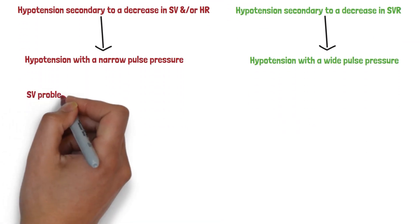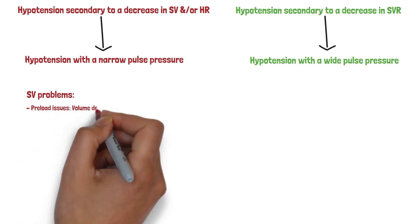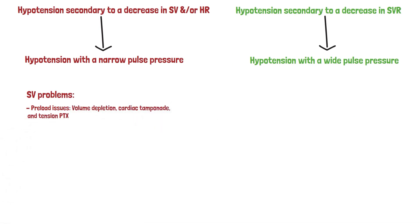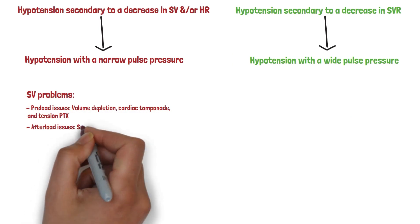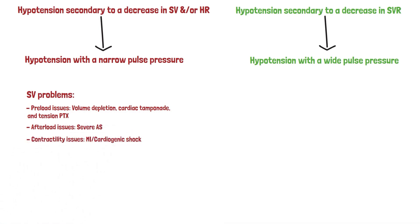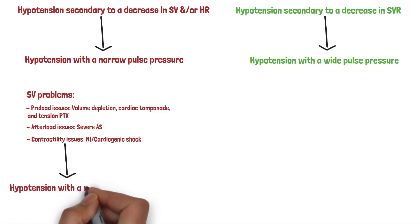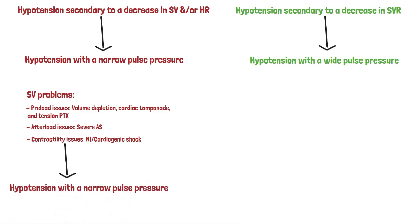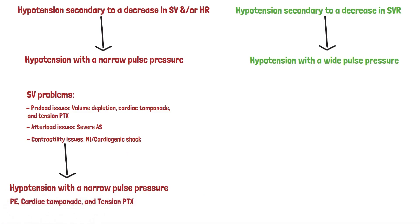Stroke volume problems include preload problems like volume depletion, cardiac tamponade, and tension pneumothorax; afterload problems like severe aortic stenosis; and contractility problems like cardiogenic shock. Massive PE can cause both preload and afterload problems. All of these cause hypotension with a narrow pulse pressure. The causes of obstructive shock — PE, tension pneumothorax, and cardiac tamponade — also cause an increase in jugular venous distension.